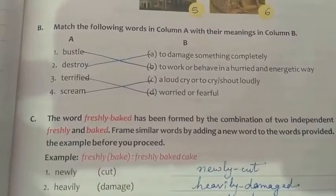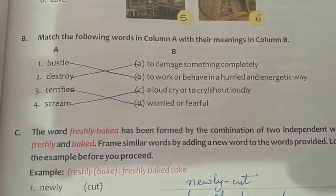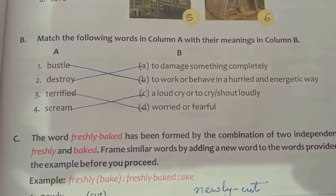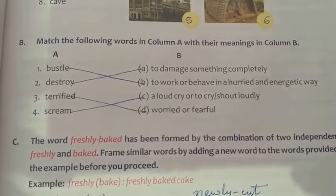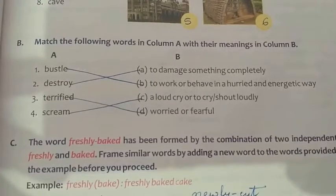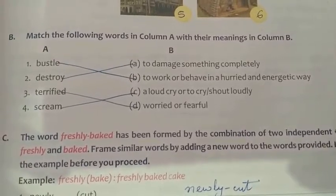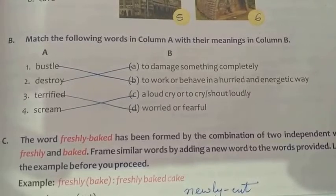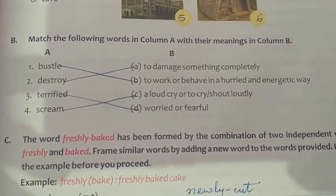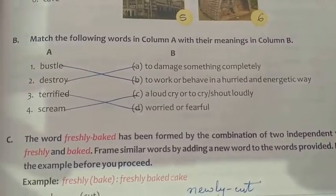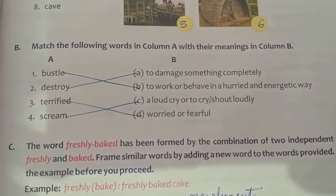Now coming to Exercise B part — match the following words in column A with the meanings in column B. Number one: Bustle — bustle means to work or behave in a hurried and energetic way, meaning to do work actively and quickly. Number two: Destroy — destroy means to damage something completely, meaning to ruin something entirely.